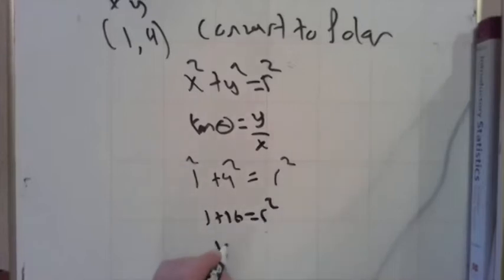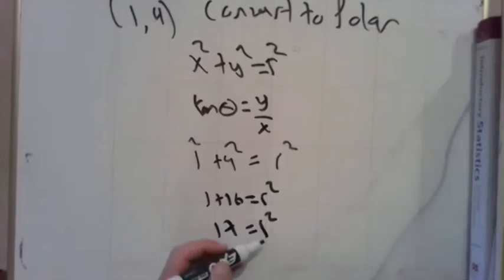Now here I'm going to take an extra step. Technically at this point when we take the square root of both sides we're supposed to put a plus or minus over on this right side. We really could have either a positive or a negative r.